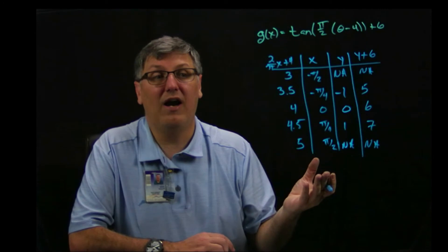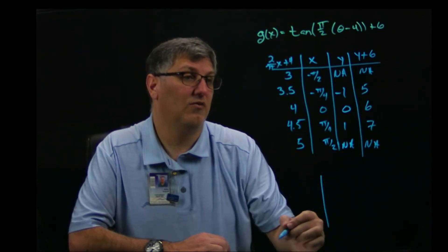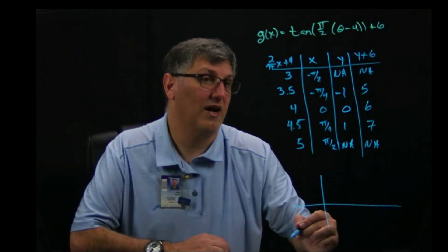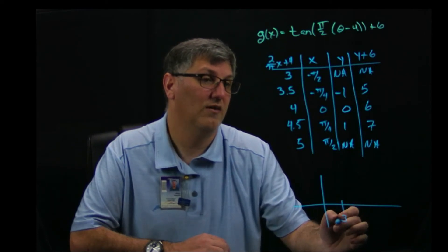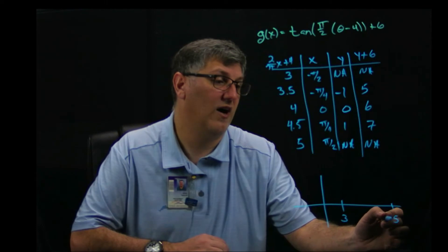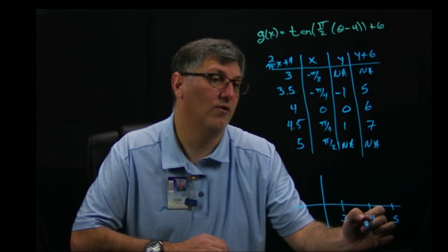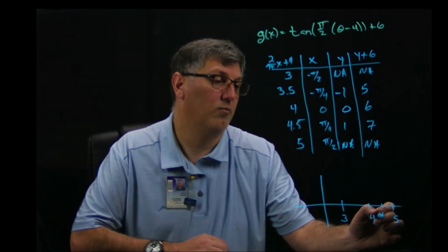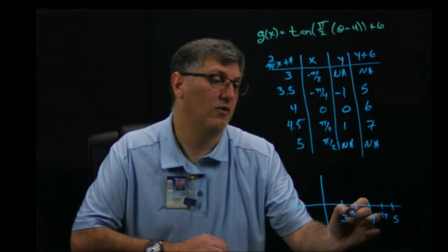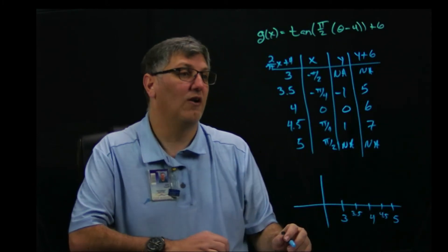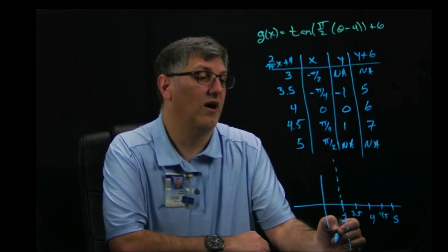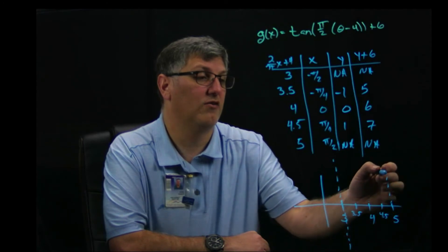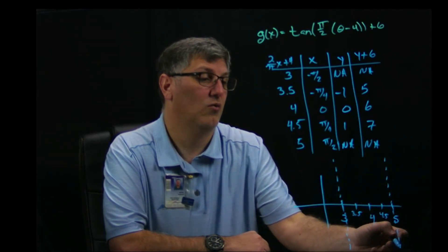So all we need to do is graph. This seems easy enough. We're just going to graph. Let's start at, let's say this, let's call this 3. Let's call this 5. So this would be 4. This would be 4.5 and 3.5. Okay. So now I got my points in here. So I know at 3, I have a vertical asymptote. Voila. I know at 5, I have a vertical asymptote. Voila.